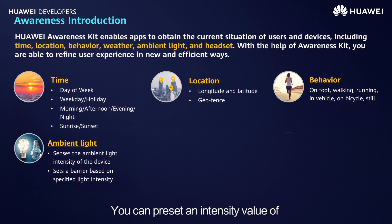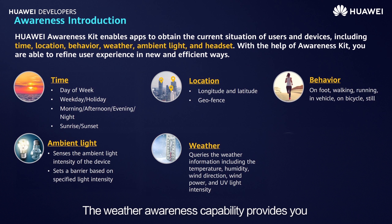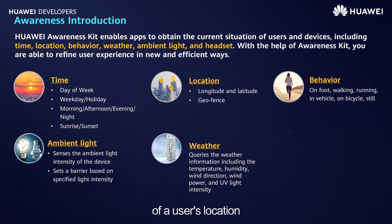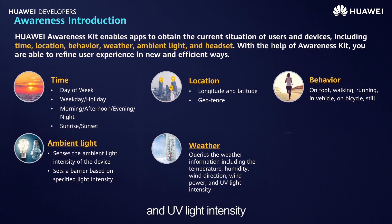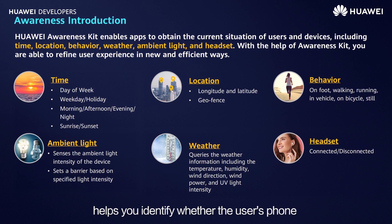The weather awareness capability provides you with the weather information of a user's location, including the temperature, humidity, wind direction, wind power, and UV light intensity. Finally, the headset awareness capability helps you identify whether the user's phone is connected to a headset, which may be a wired or Bluetooth headset.